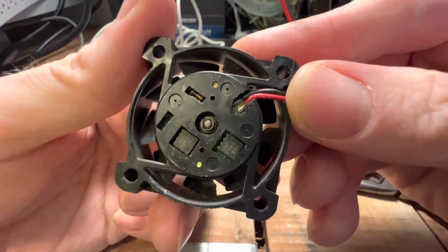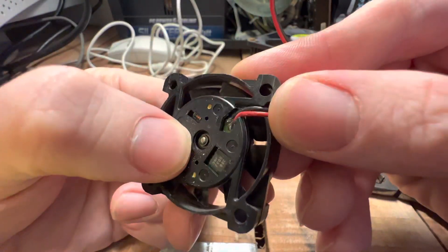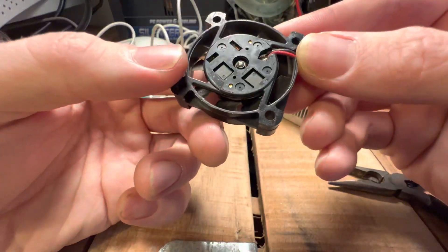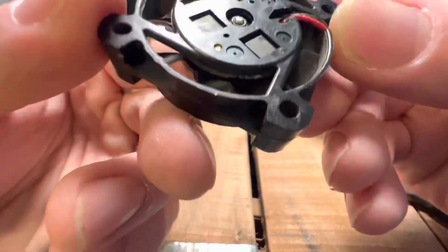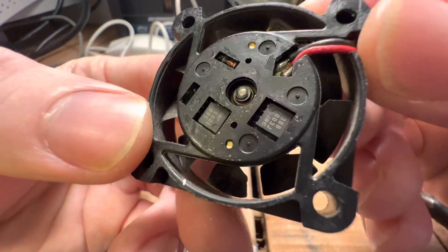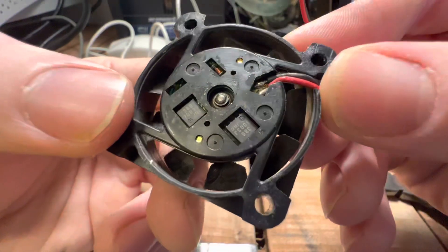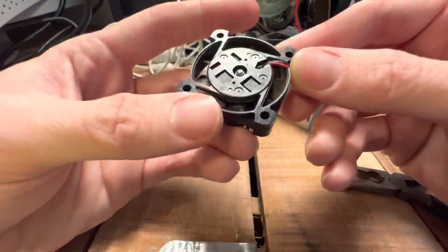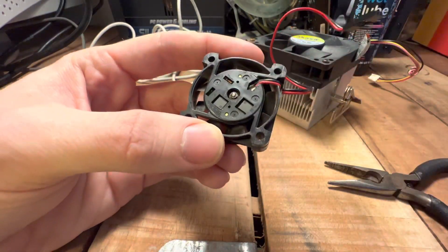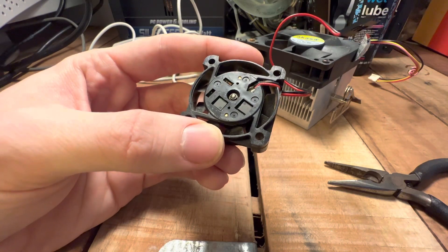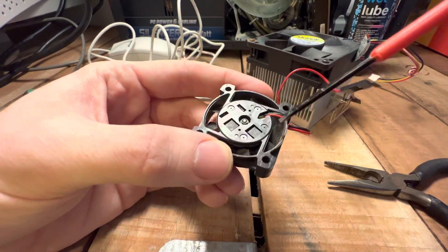If you take away the sticker on the back, there you can see we've got the central spindle, you might call it, and it should have a little sort of plastic ring which is like a little clip to keep it in the hole.